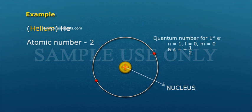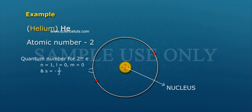Quantum numbers for the first electron: n equals 1, l equals 0, m equals 0, and s equals plus half.